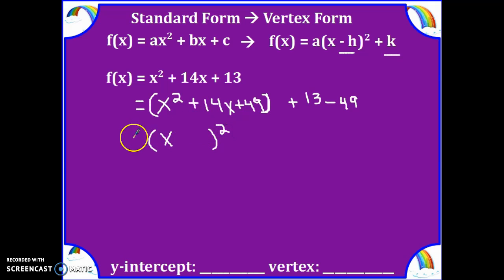Now I want to set up and factor our perfect square trinomial. We take the root of our quadratic term, we take the sign of our linear term, and we take the root of our constant term, which is 7. And now we will combine the 13 and the minus 49, and we get negative 36, and we are finished.